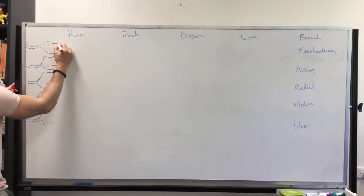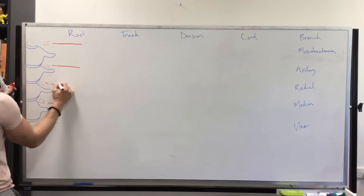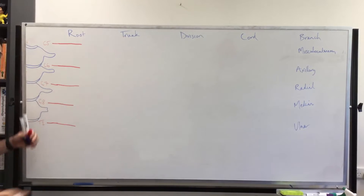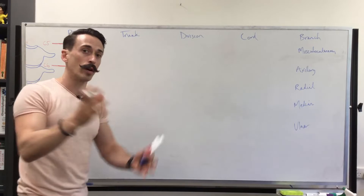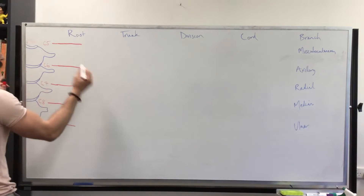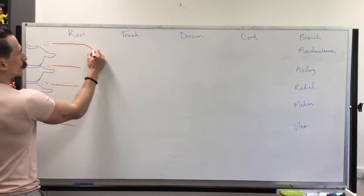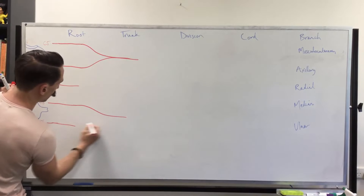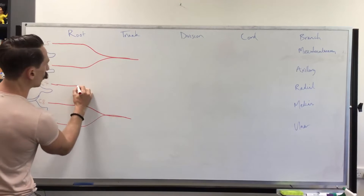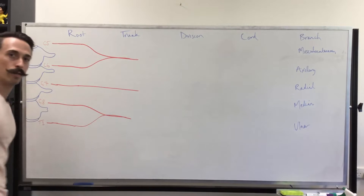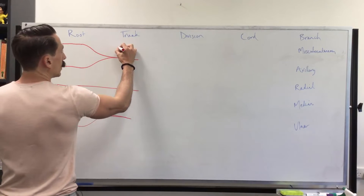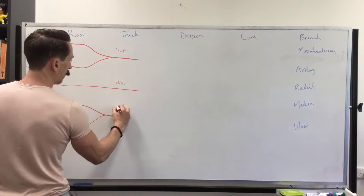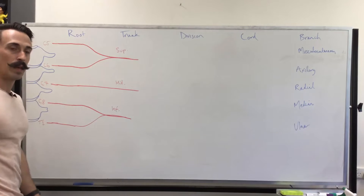We have five nerve roots coming from C5, C6, C7, C8, and T1. Roots go into a trunk, just like roots of a tree go into a trunk. The top two merge together to form a trunk, the bottom two merge together to form a trunk, and the middle one stays by itself to form a trunk. What we have is a superior, middle, and inferior trunk.